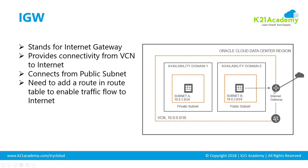Internet gateway is another gateway used to connect a public subnet to the internet. If you have a subnet and want machines to connect to or talk to the internet, you create an internet gateway and attach it to the subnet via a routing table — routing from the public subnet through the internet gateway all the way to the internet. The role of the internet gateway is to connect a machine within a virtual cloud network to the internet.